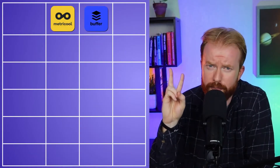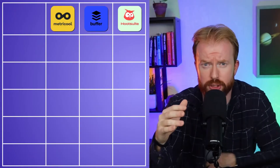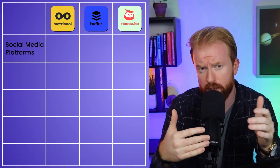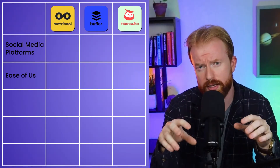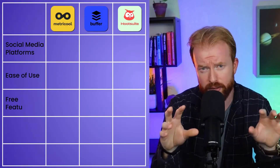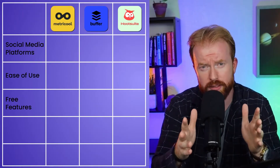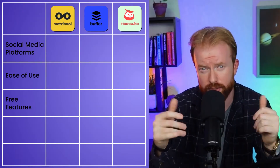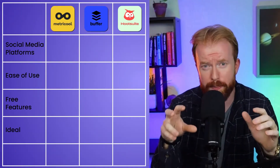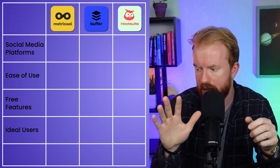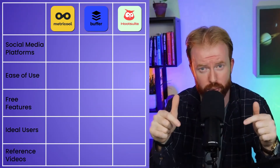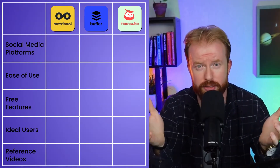There are three post schedulers people traditionally use when automating their social media content. The first one is Metricool, the second is Buffer, and the third is Hootsuite. For each one we're going to cover: what platforms are available, the user-friendliness, what you get with the free versus paid version — all of these are free in some manner, and I personally use a completely free tool — and finally, who that post scheduler is best for. I also have a training video on each one you can watch after this.